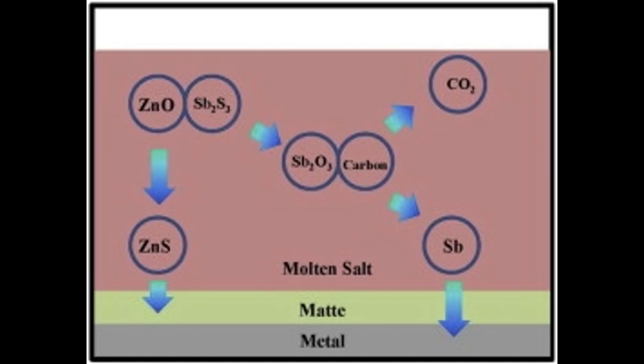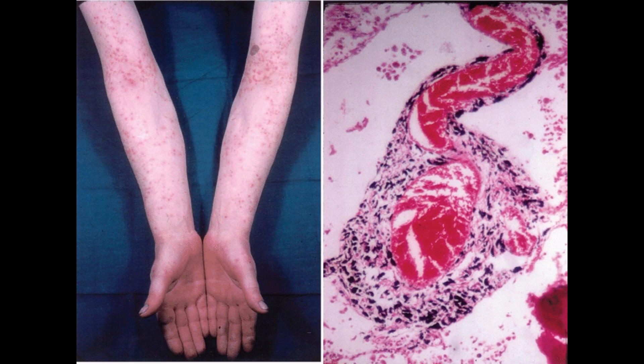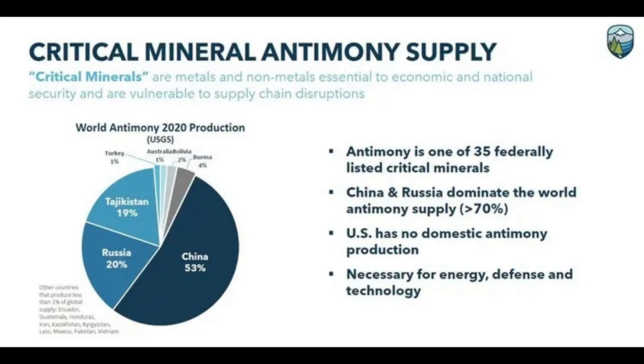Antimony is a toxic metal, and its production and use can have a negative impact on the environment. Antimony can contaminate soil, water, and air, and it can be harmful to human health if ingested or inhaled. However, the environmental impact of antimony can be minimized by using proper controls and regulations.